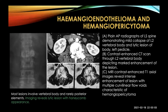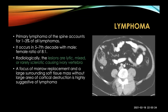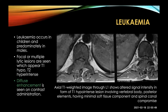Looking at hemangiopericytoma across four imaging modalities: X-ray shows vertebral involvement; contrast CT shows involvement of the vertebral body; MRI shows intense enhancement with multiple curvilinear flow voids, which are characteristic of hemangiopericytoma. Lymphomas account for about one to three percent of lymphomas, usually in the older population. Lesions are lytic, mixed, or rarely sclerotic. On MRI, there is focal marrow replacement with a large surrounding soft tissue mass without large cortical destruction — highly suggestive of lymphoma. Leukemia is also seen, mostly in male children, involving the vertebral body and neural arch with diffuse enhancement on contrast; lesions appear hypointense on T1 and hyperintense on T2.